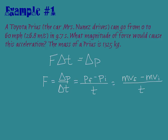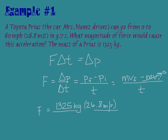The car is going from zero to 60, so my initial velocity is zero, which means the initial momentum is also zero. To find the force, I simply need to do the mass of the Prius, 1,325 kilograms, times its final velocity in meters per second — 26.8 meters per second — divided by the amount of time it takes, which is 9.7 seconds. Plugging that all into a calculator, and with proper significant figures, you should get 3700 Newtons.